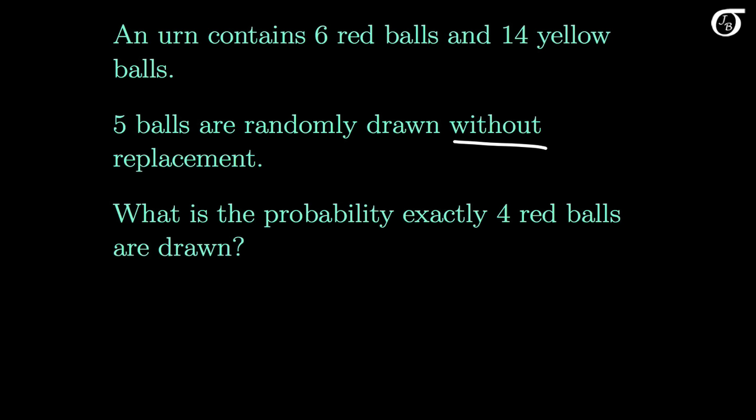And that implies that the trials are not independent. Knowing what happens on one trial gives some information about the probabilities on other trials. Because the trials are not independent, the binomial distribution would not be appropriate here.